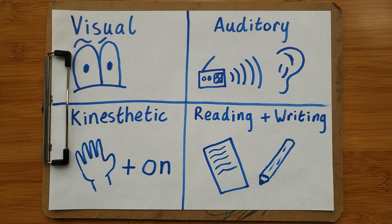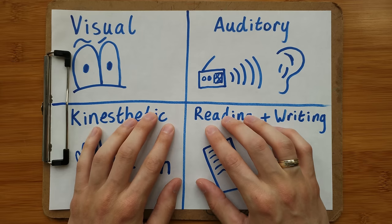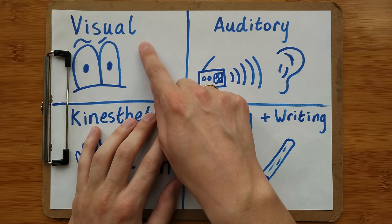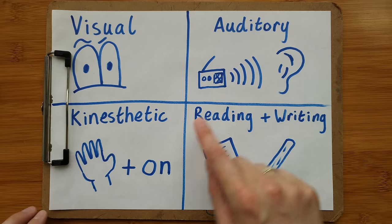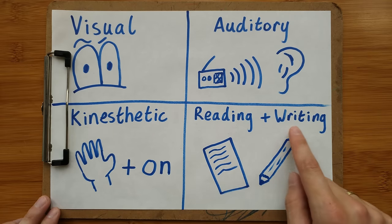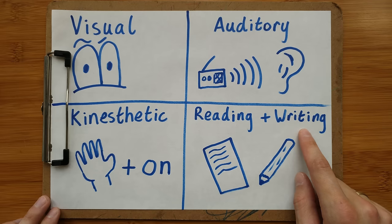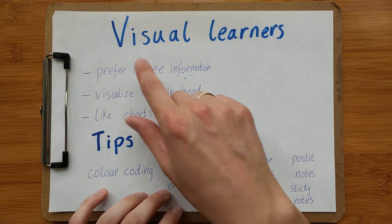It's interesting to know what style we are so we can study and learn better in the future by using learning styles that are better suited for us. The four main styles of learning we're going to look at today are visual learning, auditory learning, kinesthetic learning, and reading and writing. Let's take a look at them one by one.